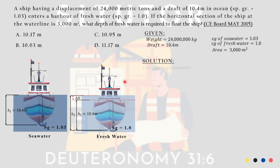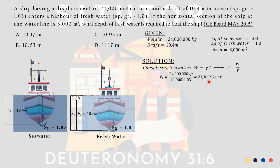So how do we approach this? Considering the seawater first: we know weight equals gamma times volume. Isolating volume, volume equals weight over gamma. Plugging in 24,000,000 kilograms for weight and gamma = 1.03 times 1,000, we get V1 = 23,300.971 cubic meters.